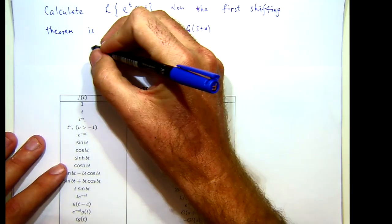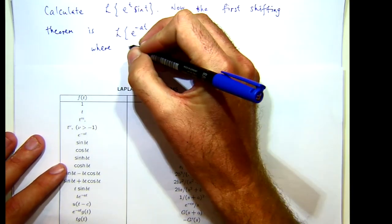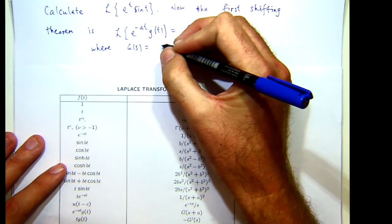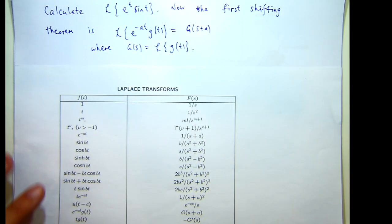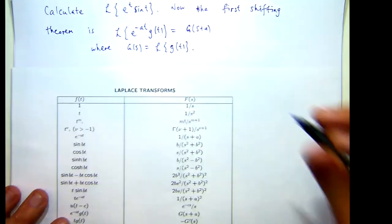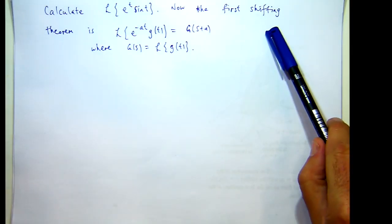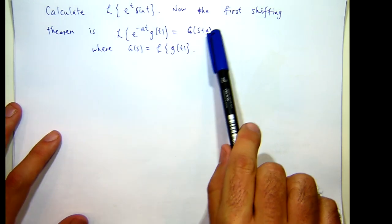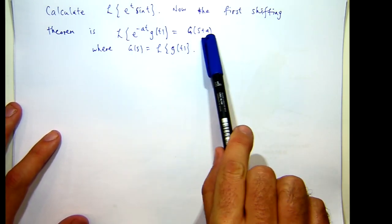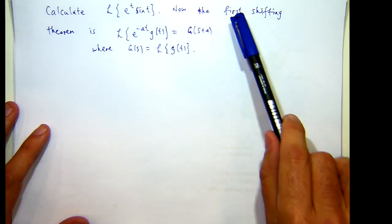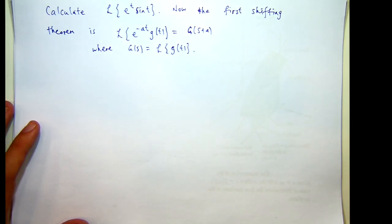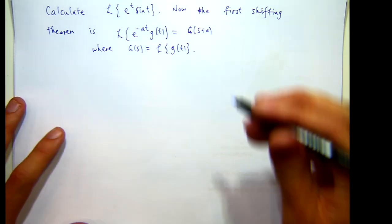So why is this called the shifting theorem? Well essentially what we do is we find this transform and then shift it a units. Now why is it called the first shifting theorem? Well there's a second shifting theorem as well but this is just a basic form.